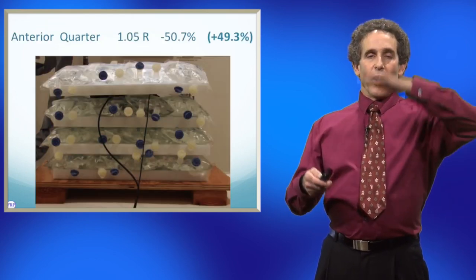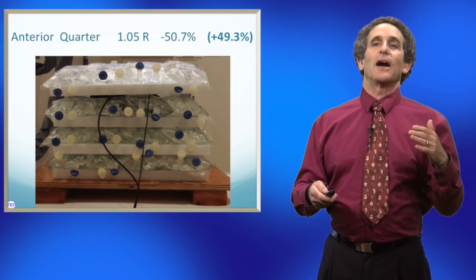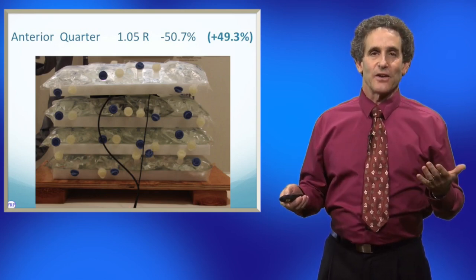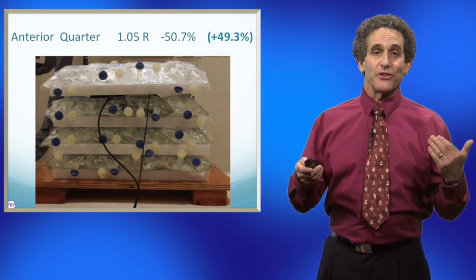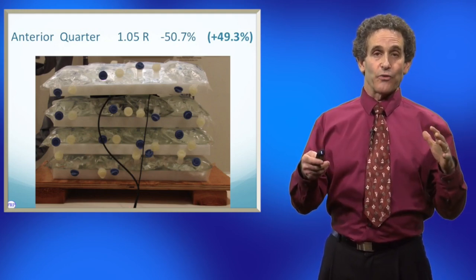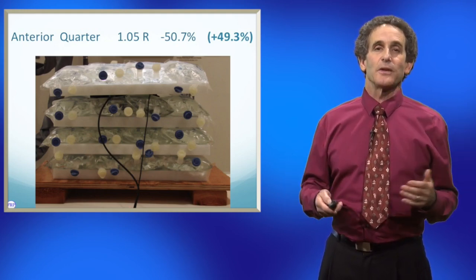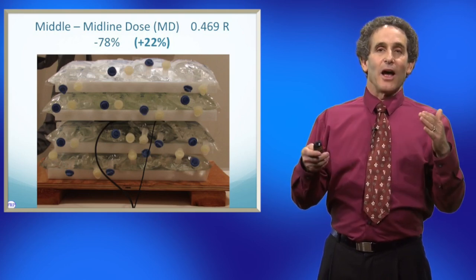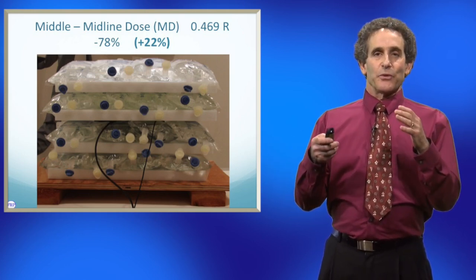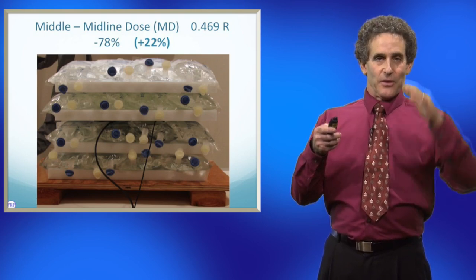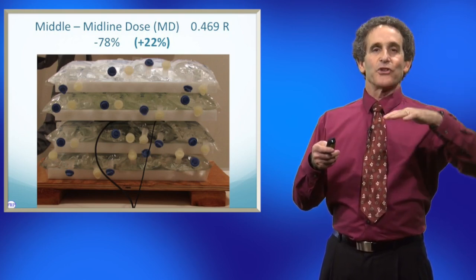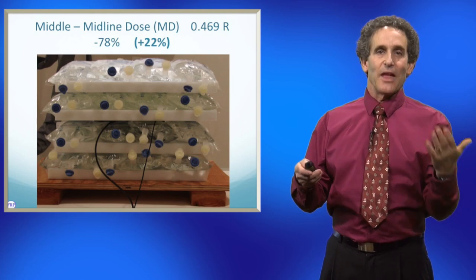When we went a quarter of the way in, it dropped down to almost exactly half. So that's basically half the dose did not make it a quarter of the way into the patient. When we got to the midline, which is also called a midline dose, that was now 22% of the original dose got to the middle of that patient.